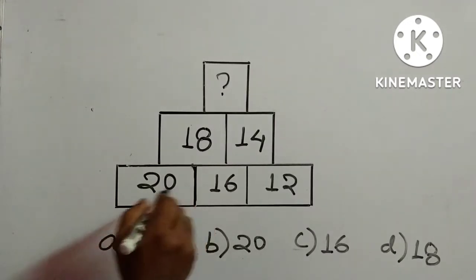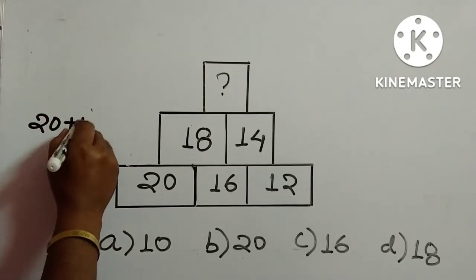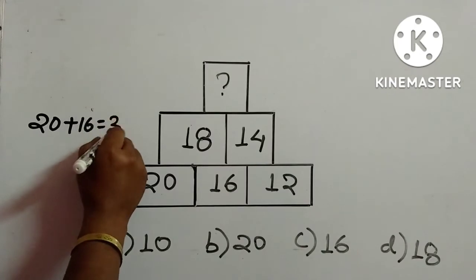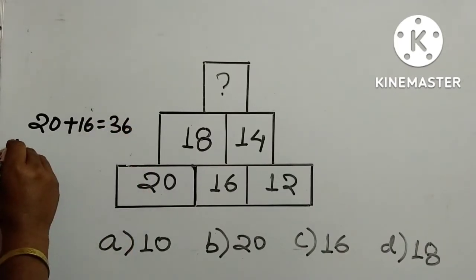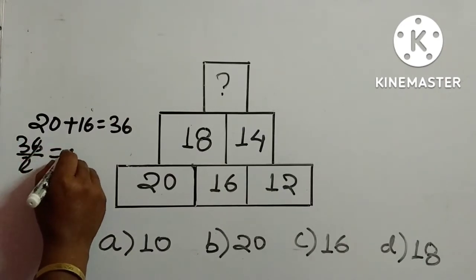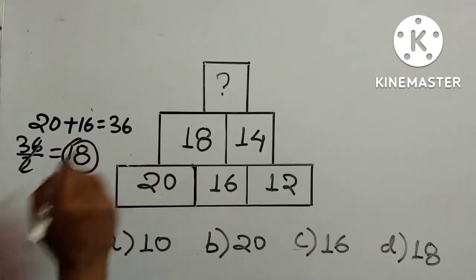We will take 20 and 16 first. 20 plus 16 is how much? 36. Now, divide this 36 by 2, so it comes to how much? 18. So this 18 is given here.